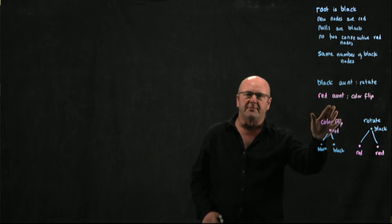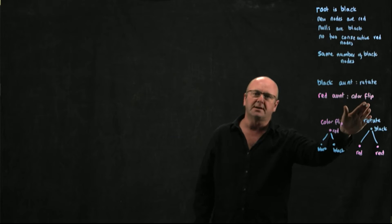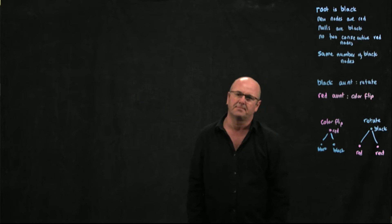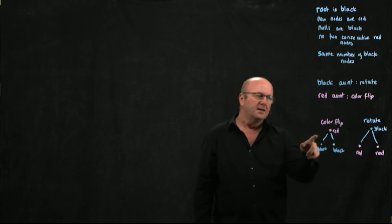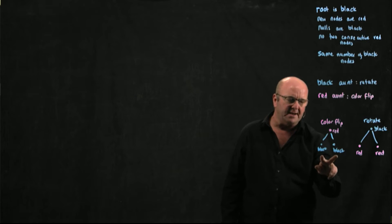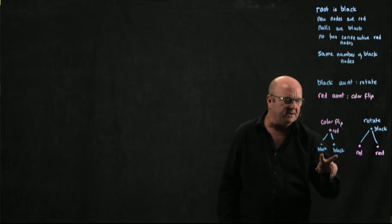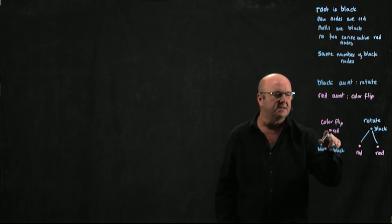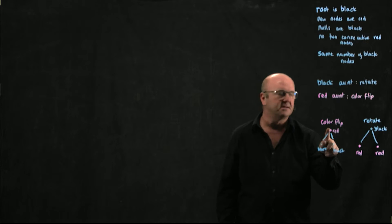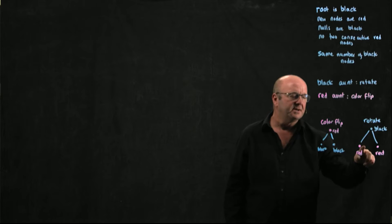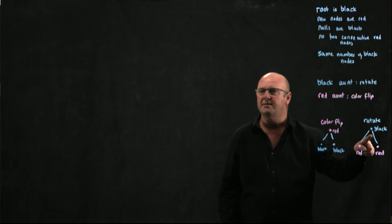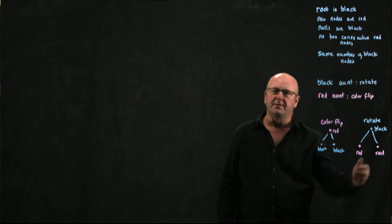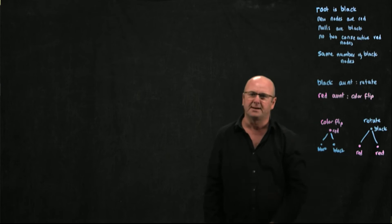If we have a red aunt, then we're going to do a color flip — which just means changing the colors. After a color flip, we end up with two black nodes as the parent and the aunt, and the grandparent is red. After a rotation, the parent and the aunt are red and the grandparent is black. We have to think about all of these rules as we're manipulating the tree.